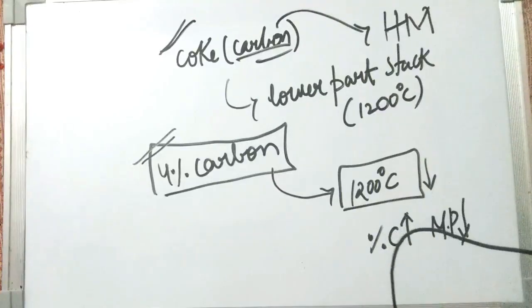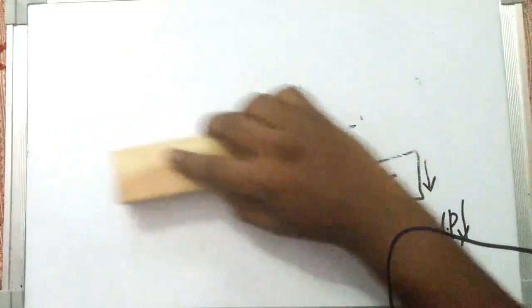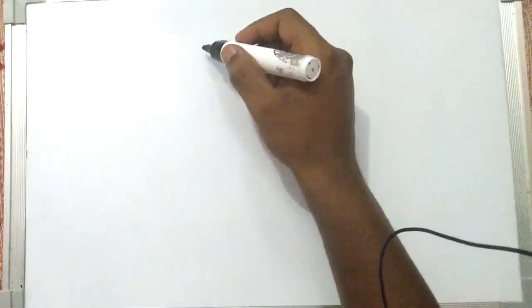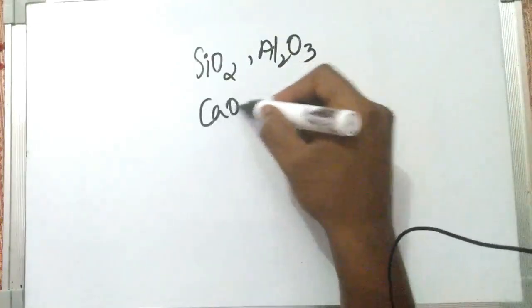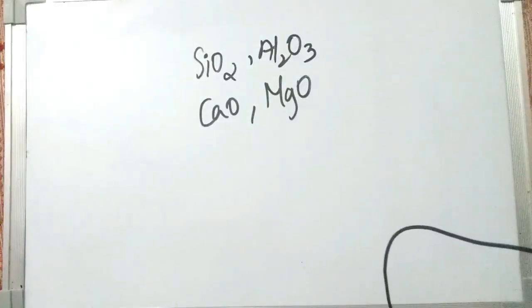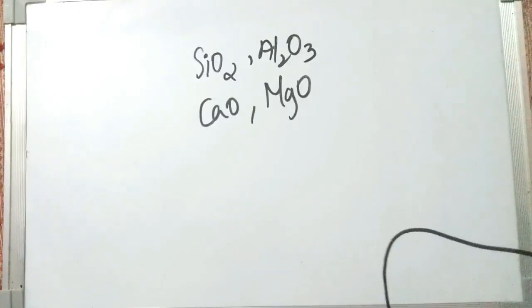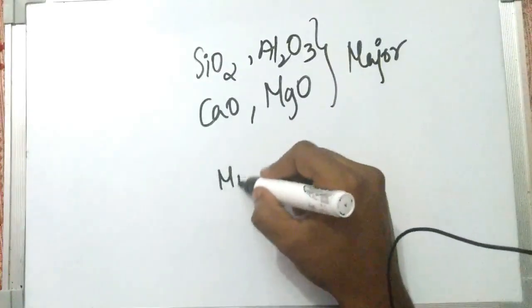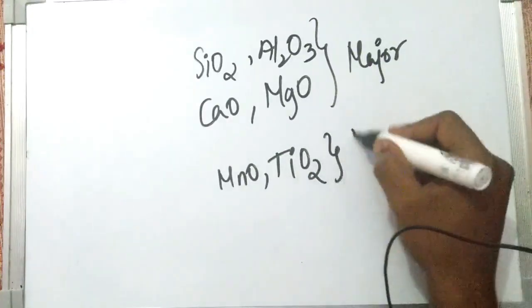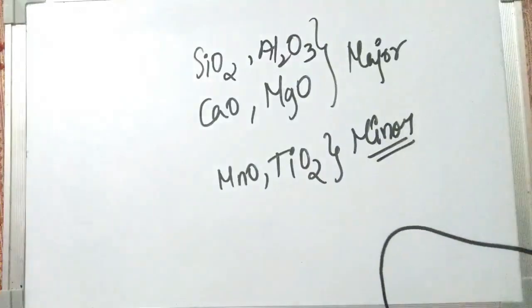Now we will discuss the major constituents of the slag. Slag is the removal of impurities from the hot metal or ore — they form a low-density layer called the slag layer. These are generally oxides like SiO₂, Al₂O₃, CaO, and MgO, which are the major constituents of blast furnace slag. There are also minor constituents like MnO and Fe₂O₃, present in much smaller percentages.